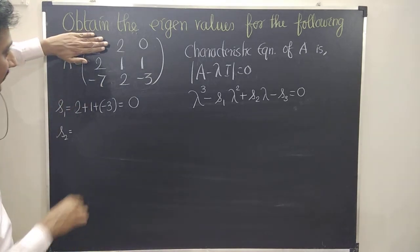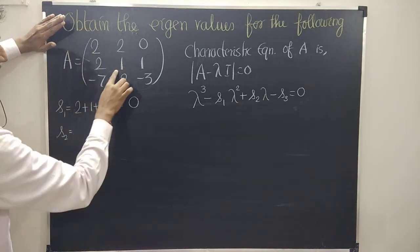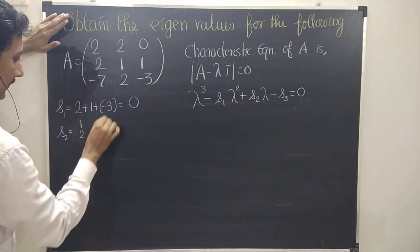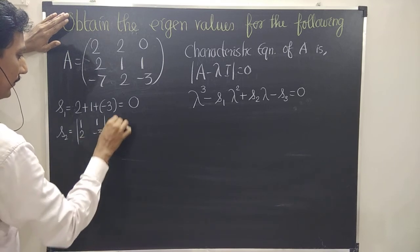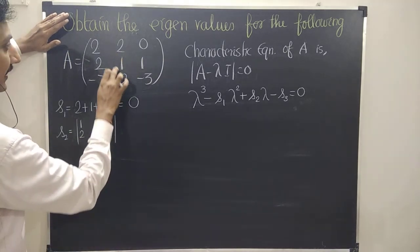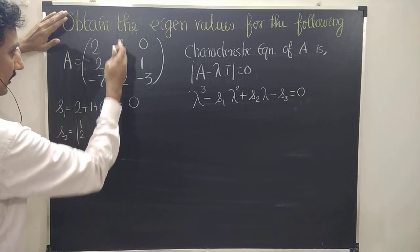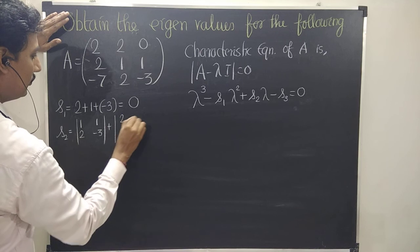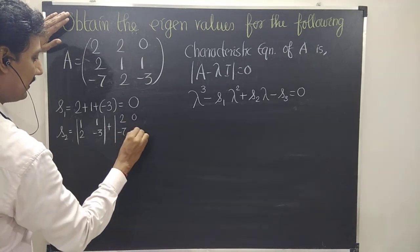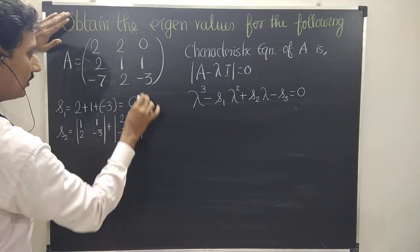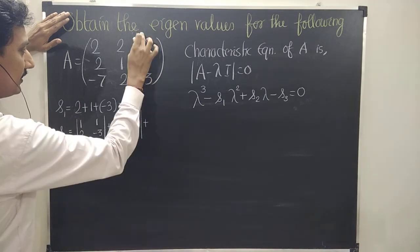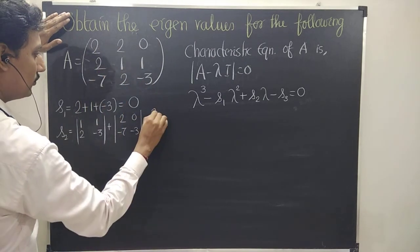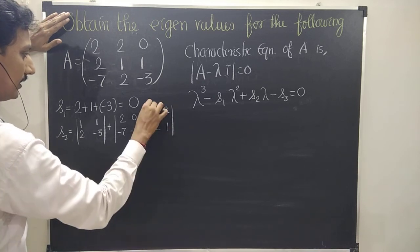For the first diagonal element, when I close the corresponding row and column, you get the minor: 1, 1, 2, minus 3. For the second diagonal element, the corresponding row and column are eliminated, giving: 2, 0, minus 7, minus 3. For the third diagonal element, this column and this row are eliminated, giving: 2, 2, 2, 1.